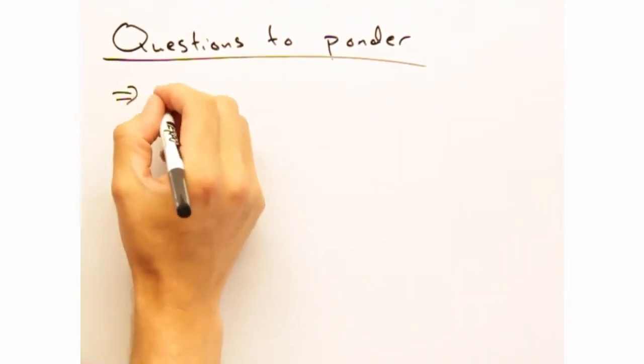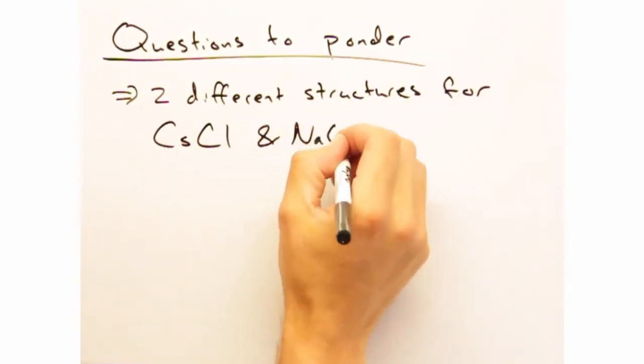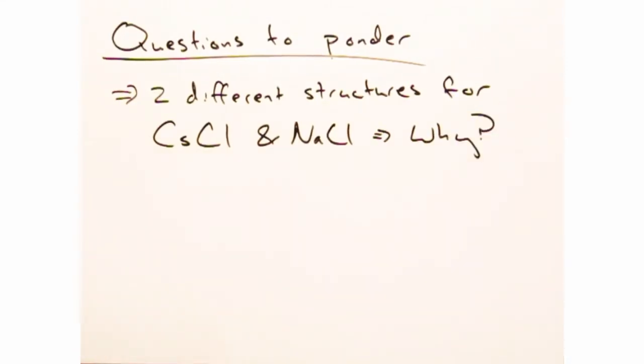We've talked before about cesium chloride and how it forms a body-centered cubic structure. Sodium chloride, on the other hand, forms another rock salt structure. So why does this happen?